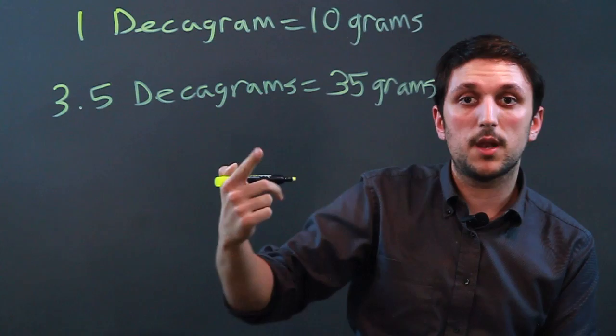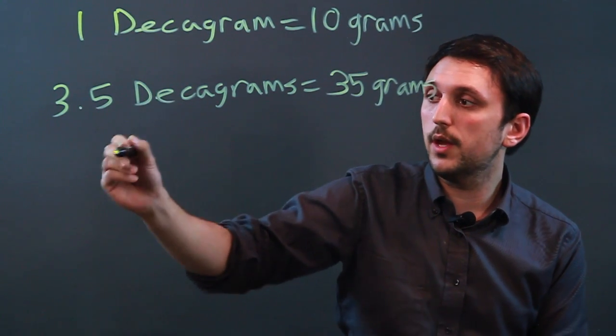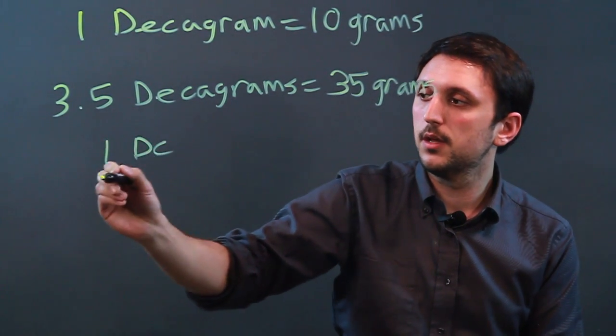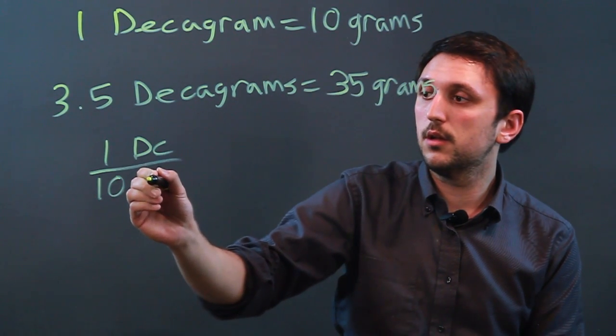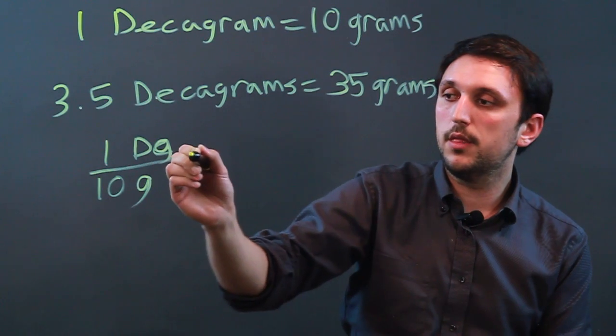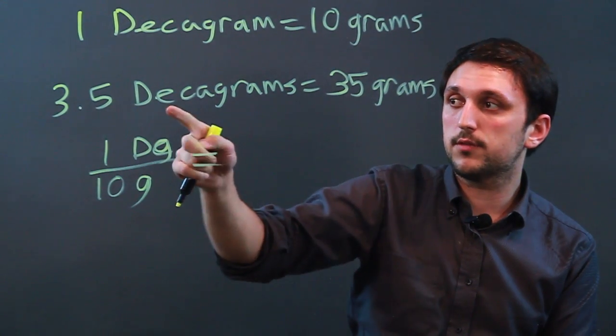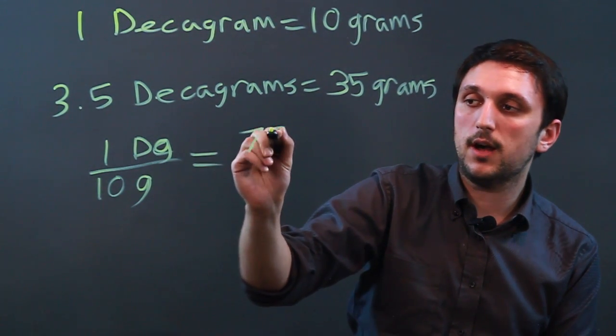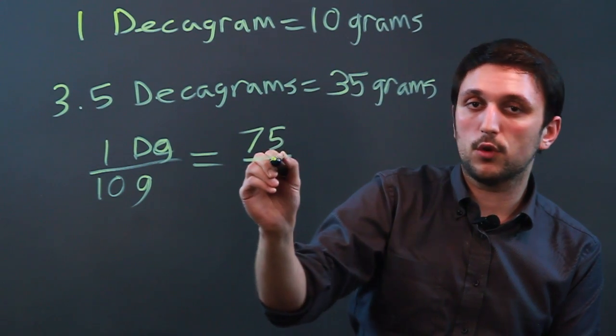What you want to do is set up a direct proportion. If we know that 1 DG equals 10G, then we know that whatever we put in, let's say we want to find out 75 decagrams, it's over X.